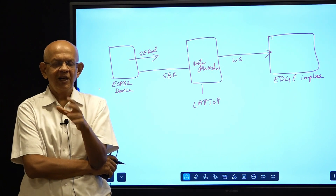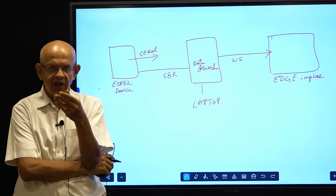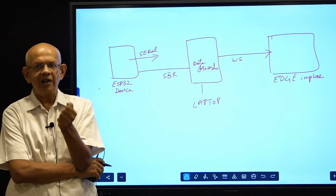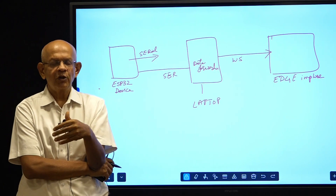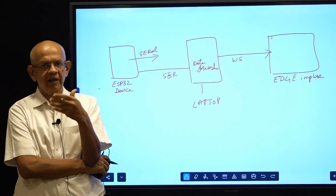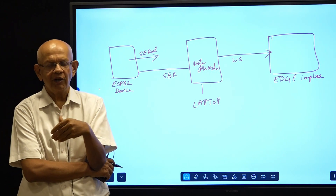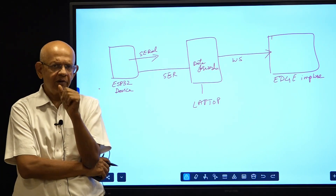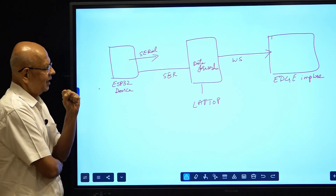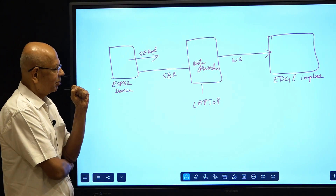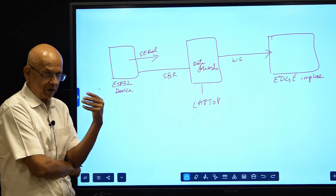Once Edge Impulse knows that a collection of data is for a particular label or gesture, it can use that data for training. It uses an ANN — artificial neural network — for training. We will go through that step by step. Let us talk a bit more about how the data forwarder works and what its action is.